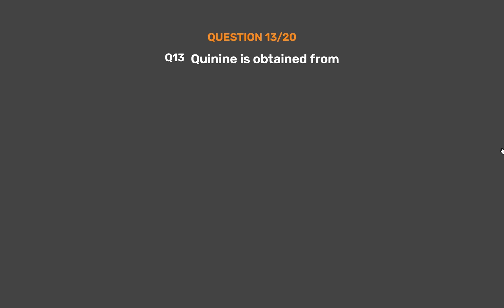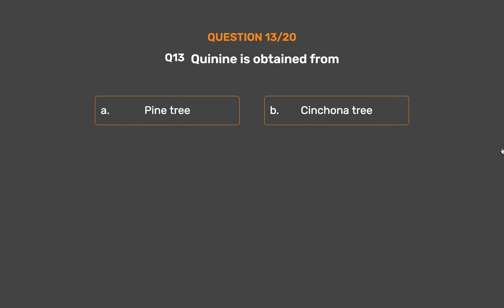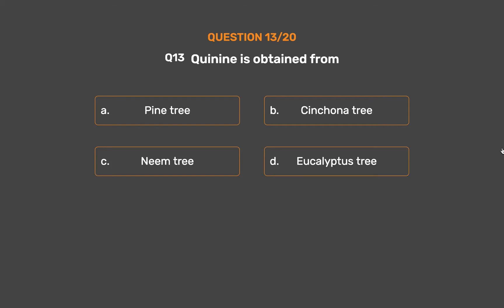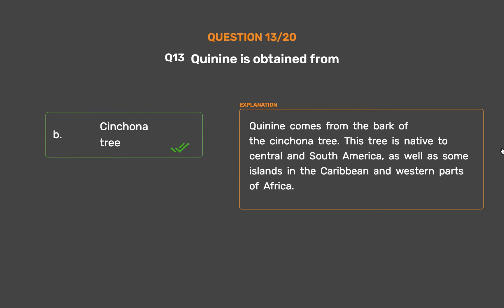Question number 13. Quinone is obtained from. Option A: Pine tree. Option B: Cinchona tree. Option C: Neem tree. Option D: Eucalyptus tree. The correct answer is Option B: Cinchona tree. Quinone comes from the bark of the cinchona tree. This tree is native to Central and South America, as well as some islands in the Caribbean and western parts of Africa.